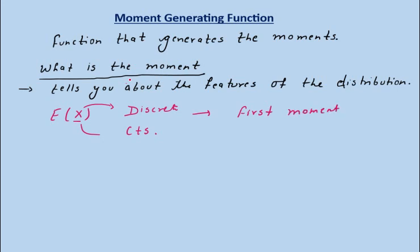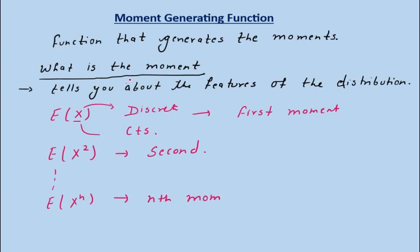Similarly, E[X²] is the second moment about the origin, and E[Xⁿ] is the nth moment about the origin. The first moment E[X] is the mean of the random variable. E[X²] is used to find the variance, E[X³] is used to compute the skewness, and E[X⁴] is the fourth moment used for kurtosis.